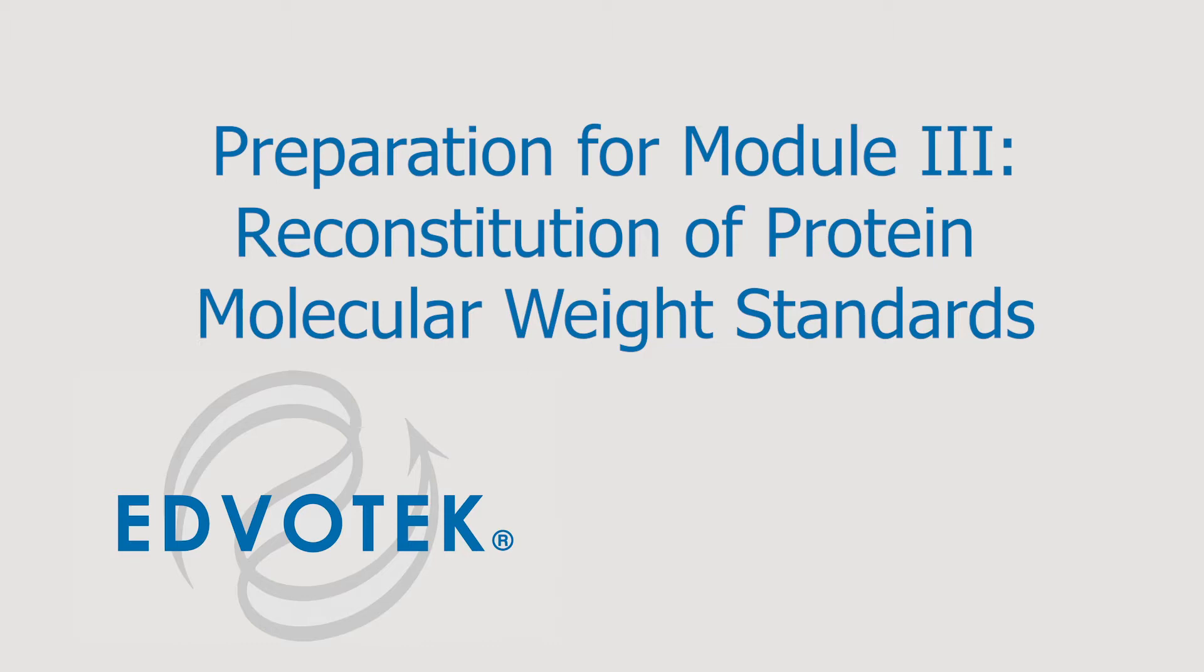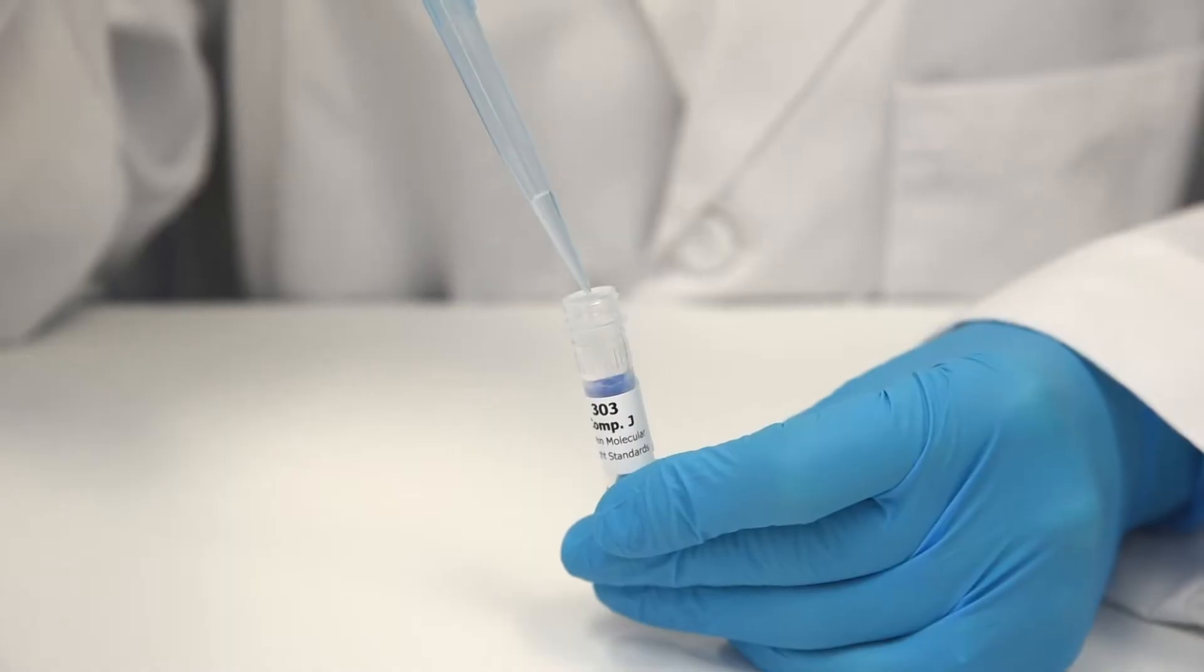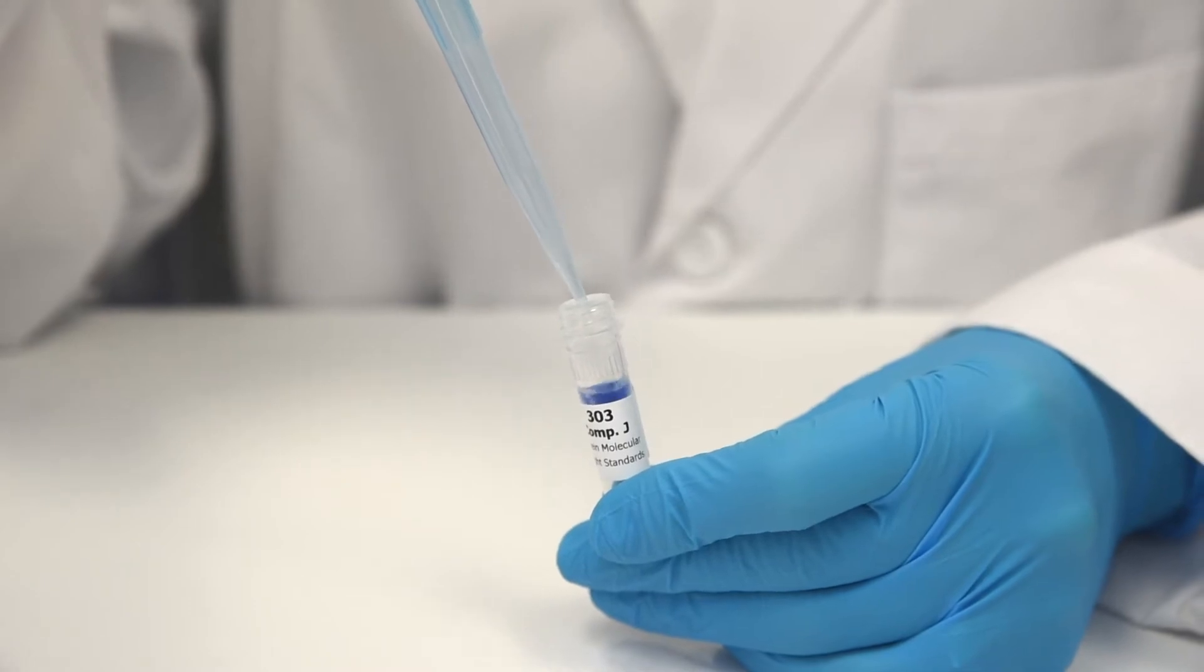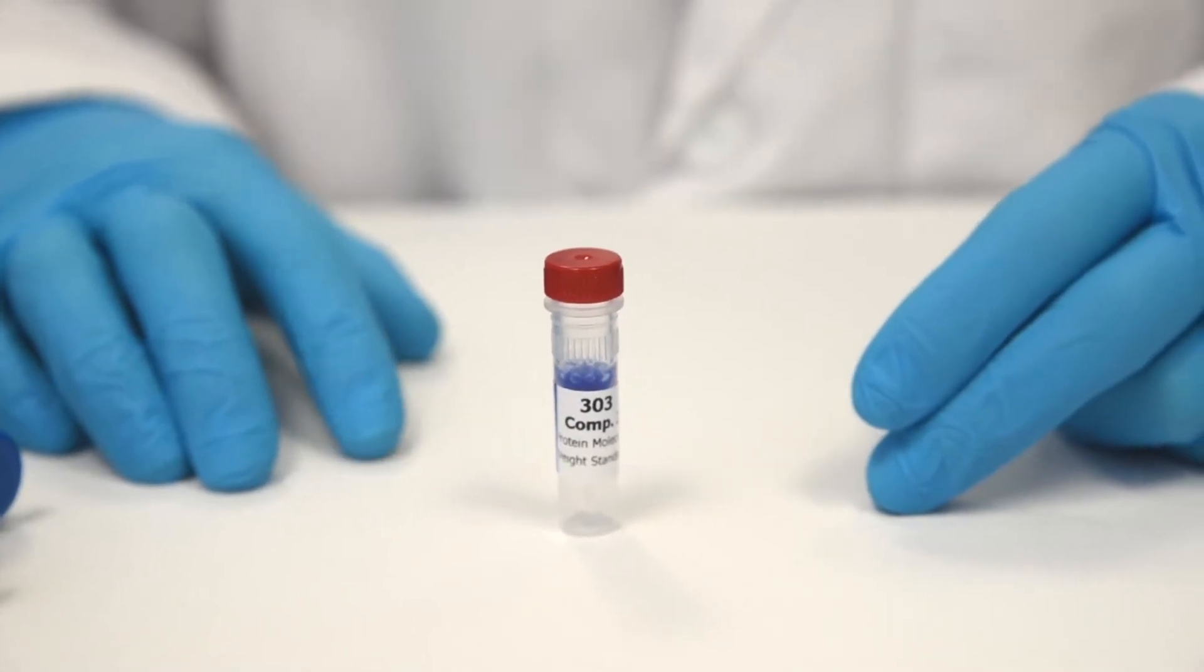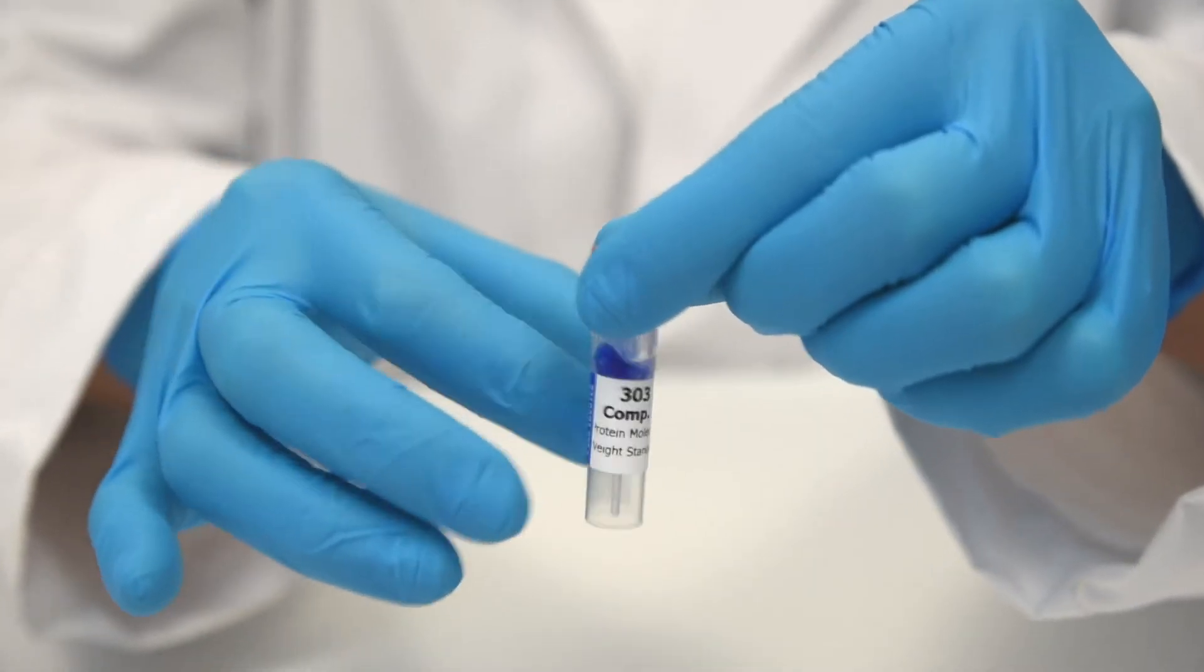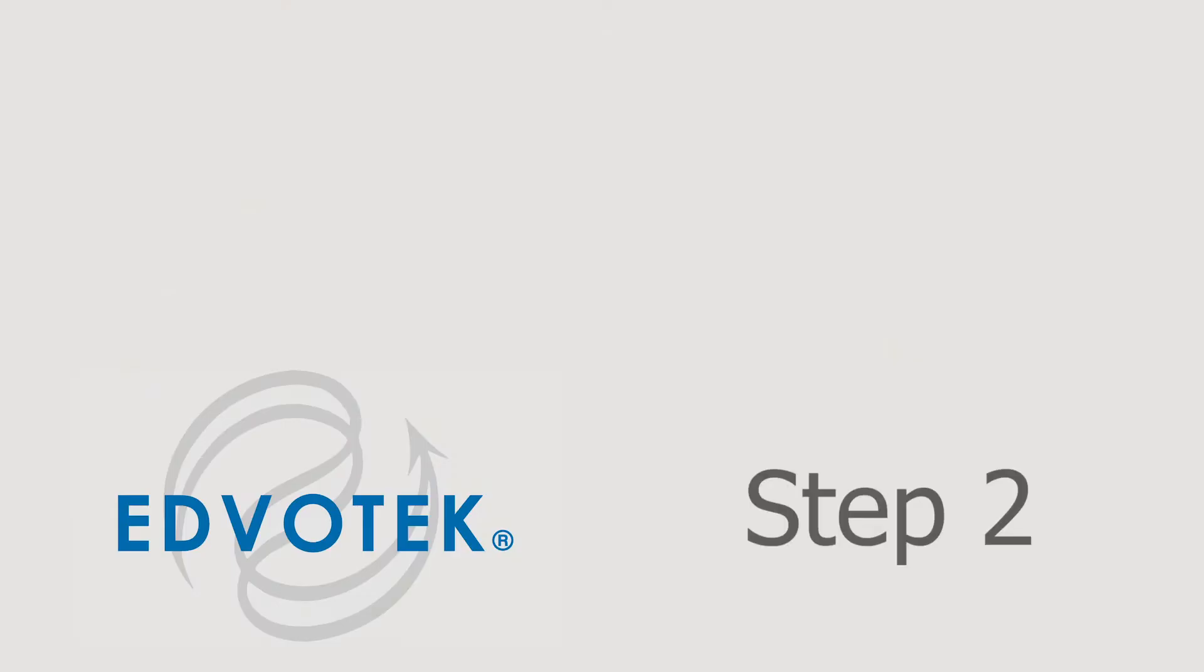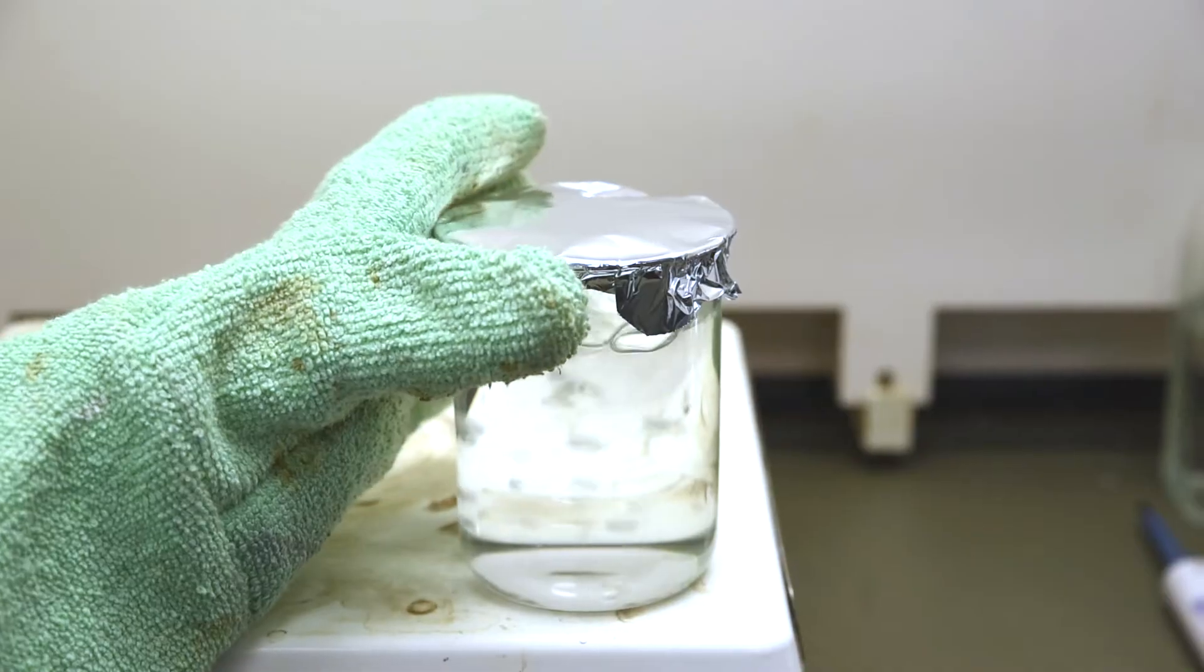Allow the material to hydrate for several minutes, vortex or mix vigorously. Step two, bring a beaker of water covered with aluminum foil to a boil, then remove from the heat.